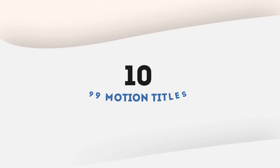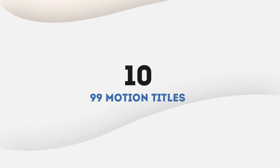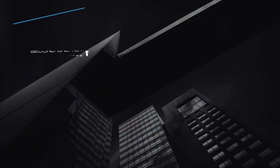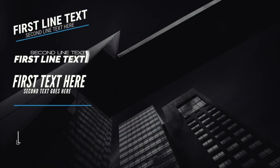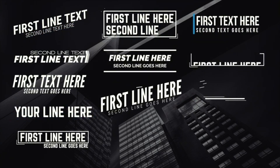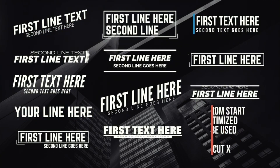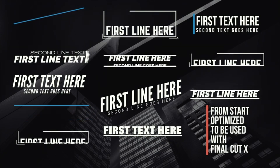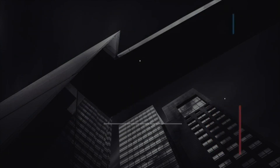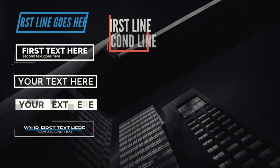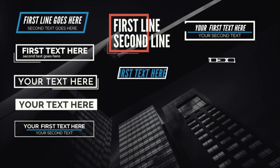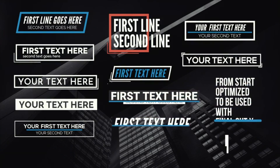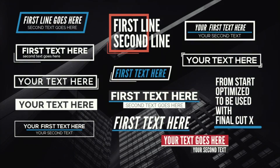Number 10: 99 Motion Titles. 99 Motion Titles is a simple yet elegant Final Cut Pro Titles template. You can customize the titles as per your requirements easily and quickly. These titles are perfect for your promo videos, YouTube channels, presentations, corporate videos, product reviews and much more.